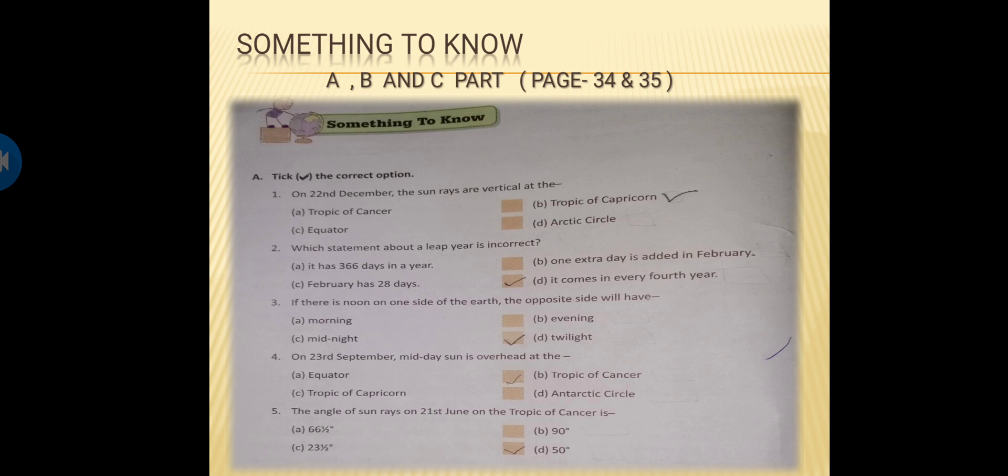Come to question number A, means A part, tick the correct option. Question number 1, on 22nd December, the sun rays are vertical at - here is 4 options: the Tropic of Cancer, Tropic of Capricorn, Equator and Arctic Circle. So option B, the Tropic of Capricorn is the correct answer. So as I have told you about the 22nd December, the sun rays are vertical in the southern hemisphere. So it is Tropic of Capricorn, because Tropic of Capricorn lies in the southern hemisphere.